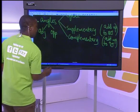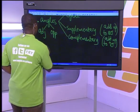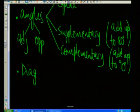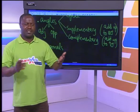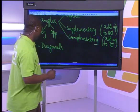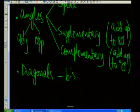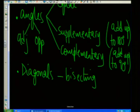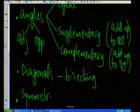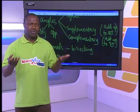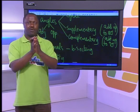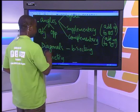Another thing will be the diagonals. With diagonals we're interested in whether we've got diagonals that bisect each other, and even whether they bisect each other perpendicularly. The focus will be on bisecting each other, or one just bisecting the other. And another thing will be symmetry — when you look at your shape, can you introduce lines that cut that shape into two equal halves that can be folded over to overlap on each other?